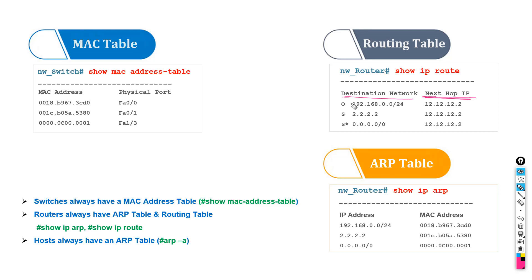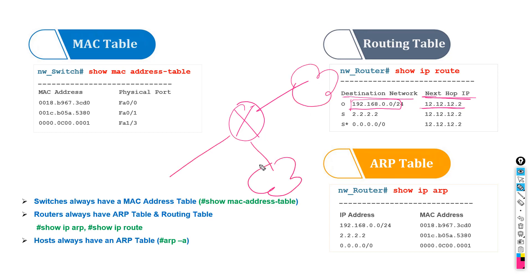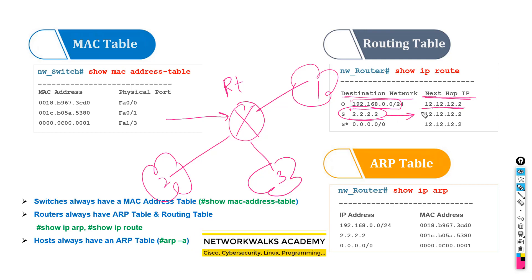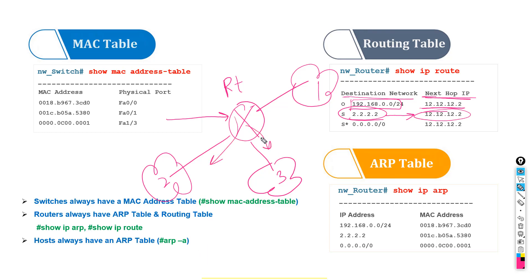It tells us that if you want to reach a device which belongs to a specific network, which next hop IP address or interface should be used. Routers may have different networks connected to them. Let's say there is a router in the middle with multiple networks — network one, two, and three. If a request comes in to reach 2.2.2.x, the routing table tells us to follow the next hop IP address, such as 12.12.1.x, depending on the routing table.